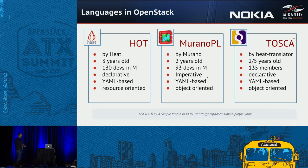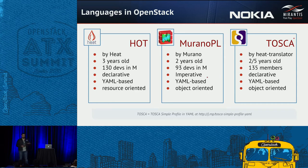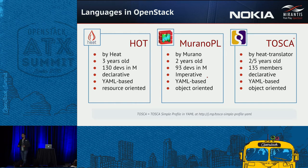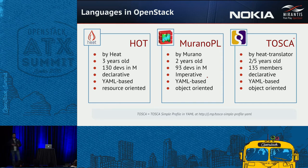One important characteristic of a language is whether it is imperative or declarative. Heat Templates and Tosca are declarative languages — you declaratively describe what you want to achieve as the result of execution. MuranoPL is imperative, meaning you specifically say what the Murano engine needs to do in order to give you the needed result.